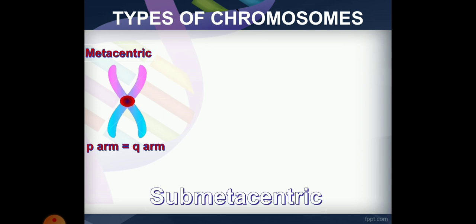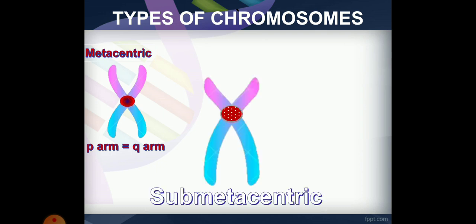The second type is submetacentric, where the P arm and Q arm are not equal — one arm is longer than the other.